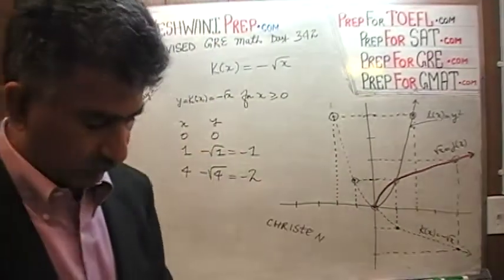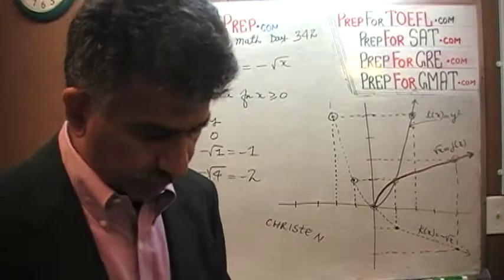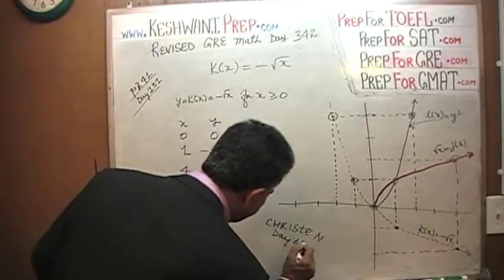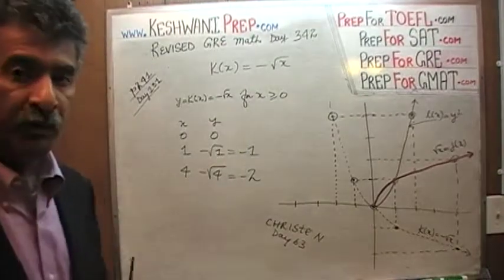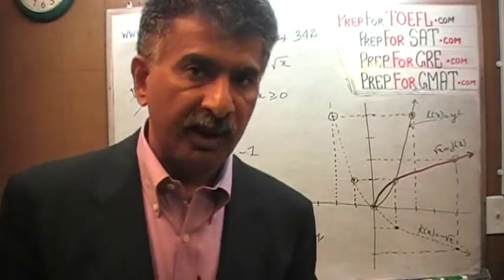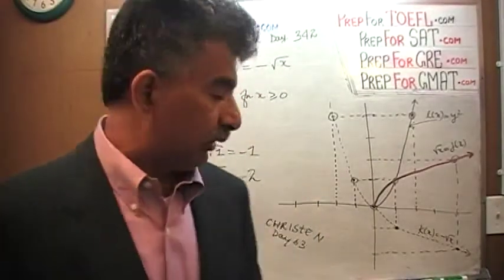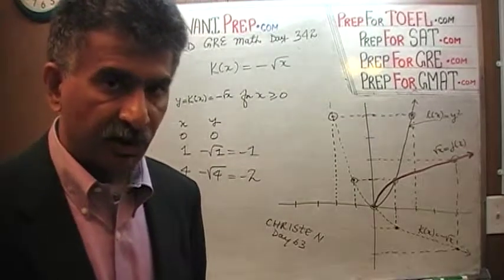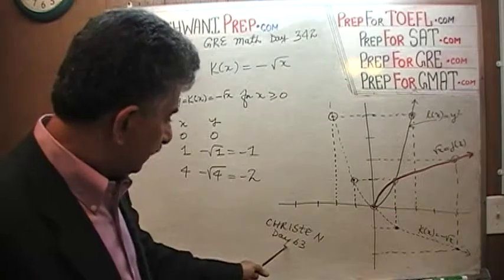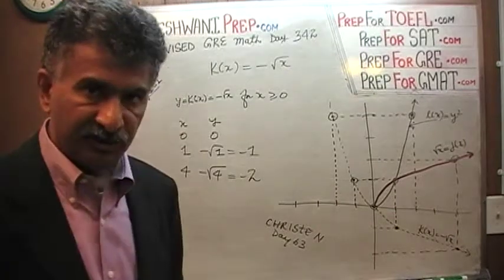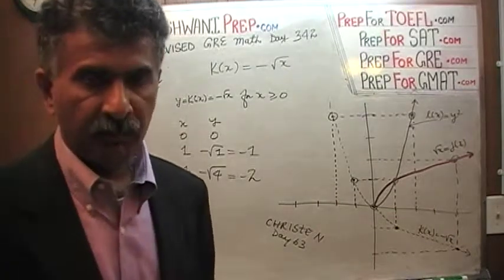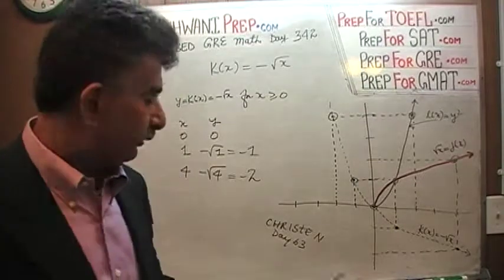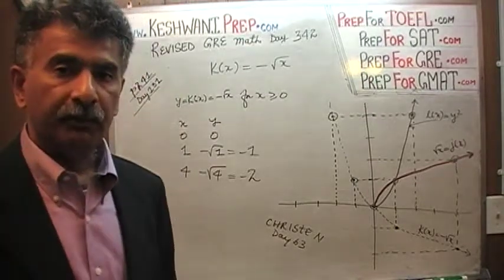Since I brought up the word 'christen,' we have to learn it. Christen has two meanings: literally it means to baptize somebody, and metaphorically it just means to give someone or something a name. We learned this word before in our vocabulary lesson on day number 63. If you are interested in improving your vocabulary along with working on your math skills, search for GRE vocabulary words, day 63, and you will find the video where we learned the word christen.